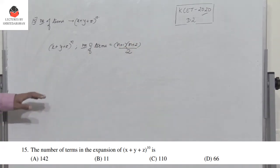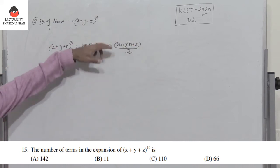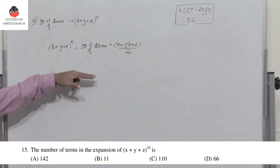All you got to do is remember this expression. The total number of terms is (n+1)(n+2)/2, where n is 10.